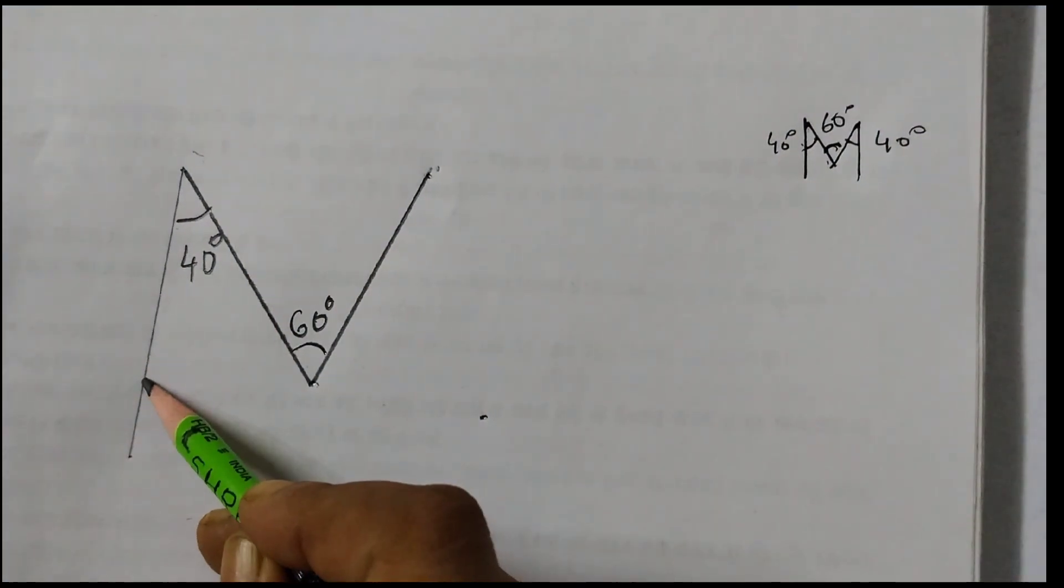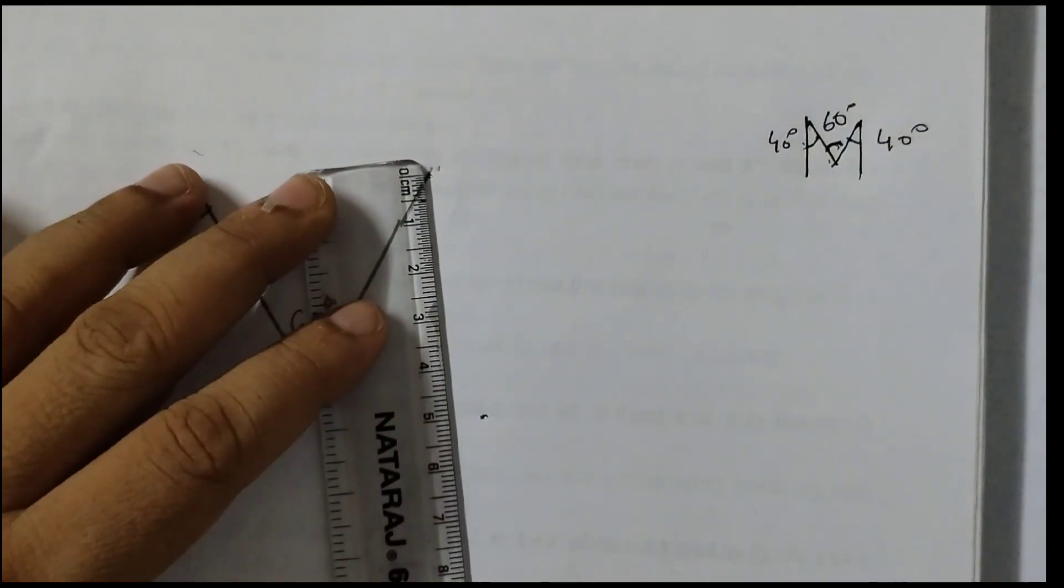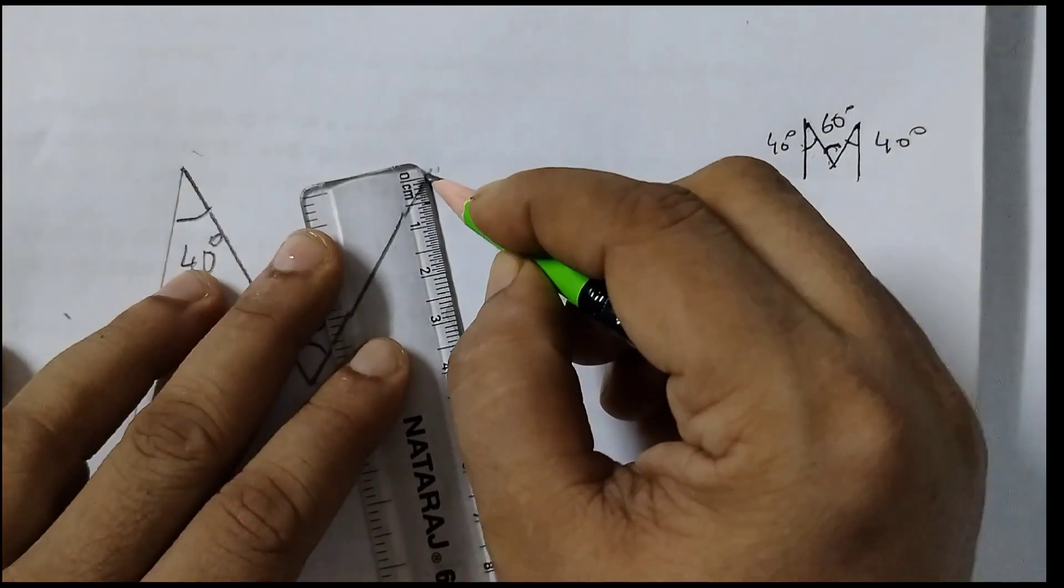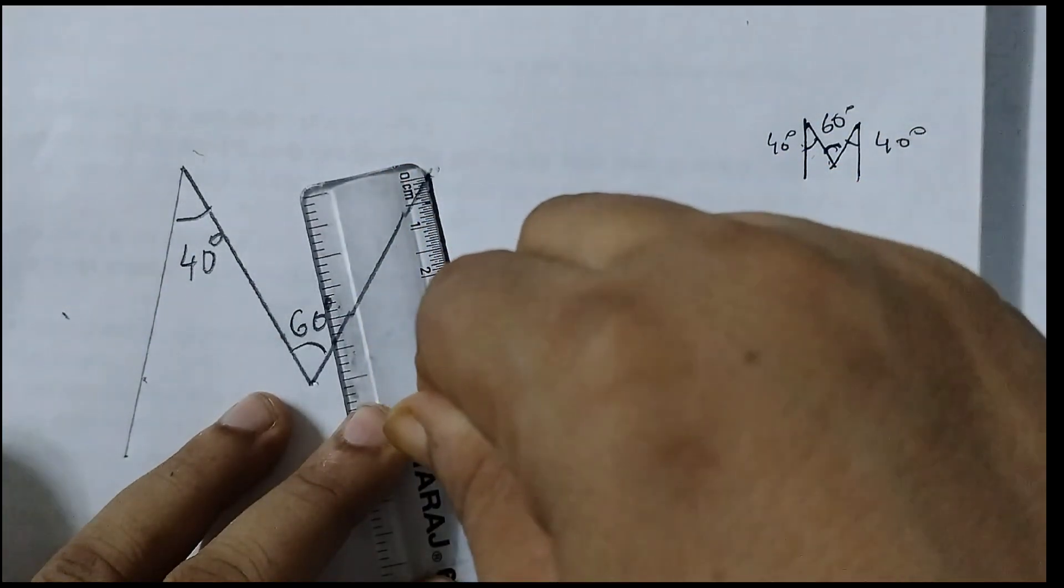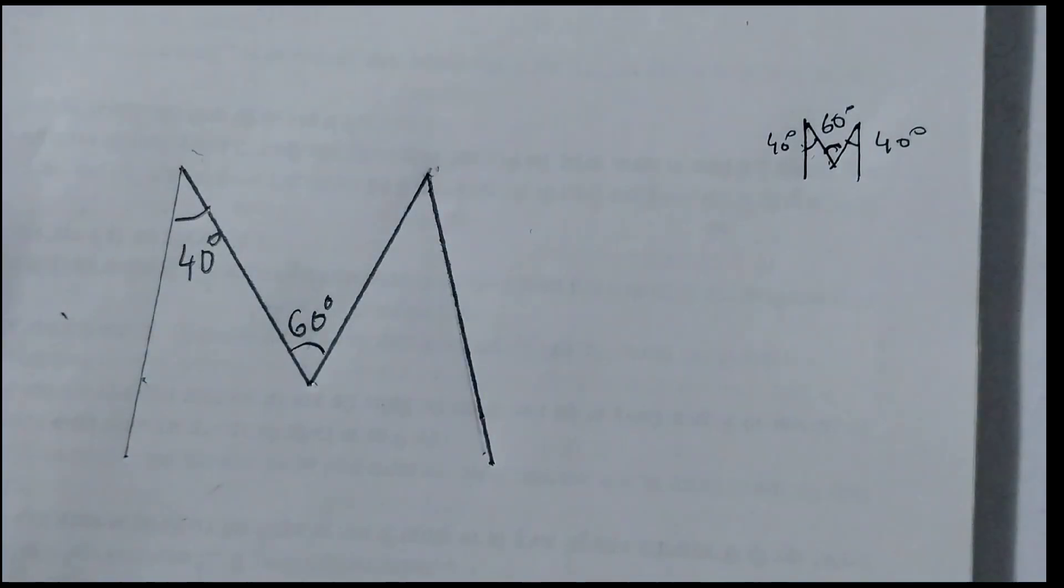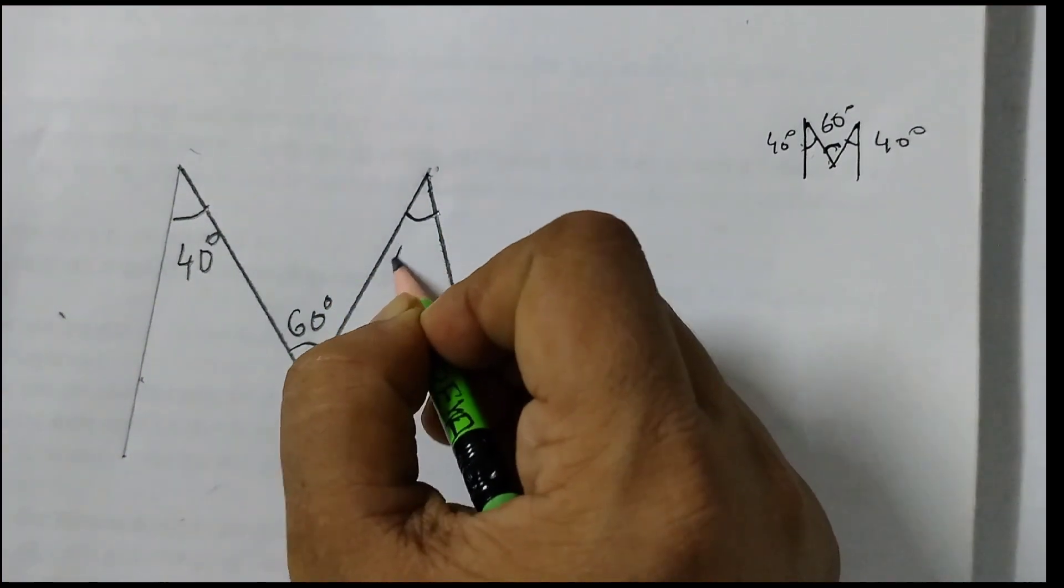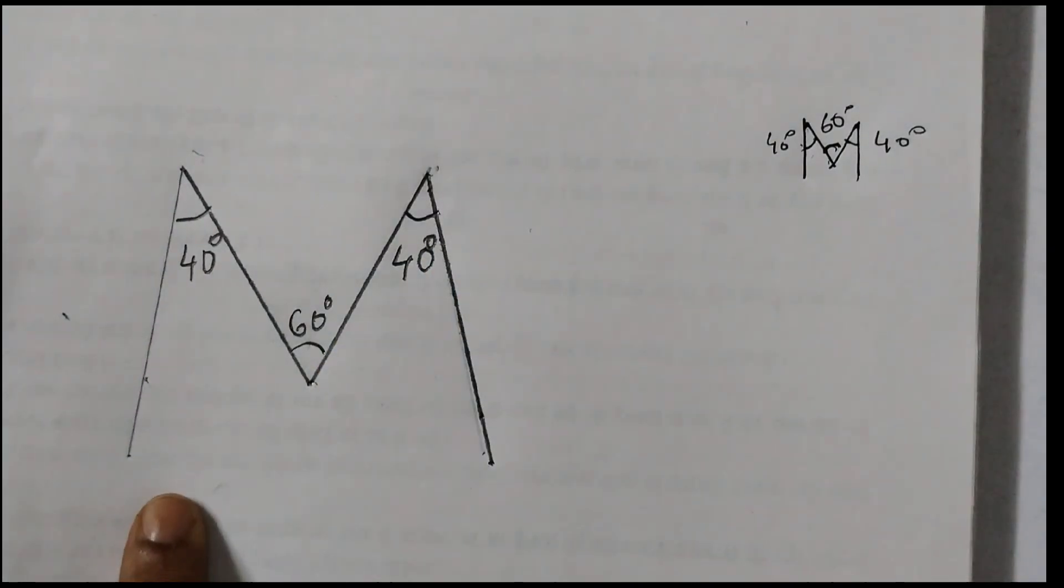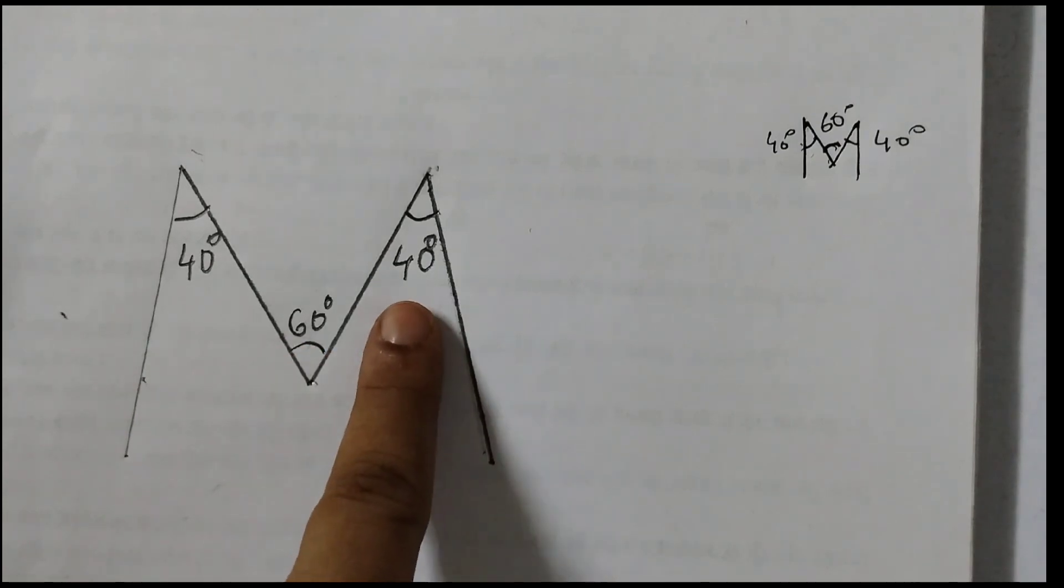And this measurement we took as 6 cm, so here also we will take 6 cm. This angle here is 40 degrees. So our M would look somewhat like this: 40 degrees, 60 degrees, 40 degrees.